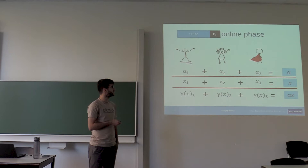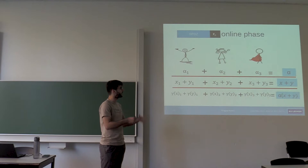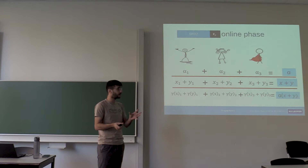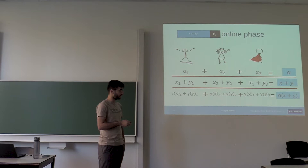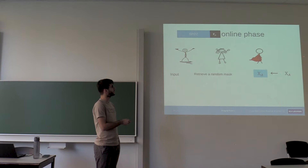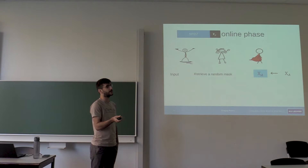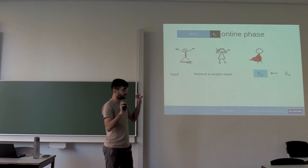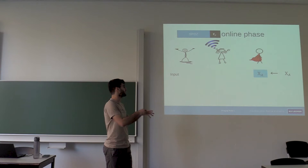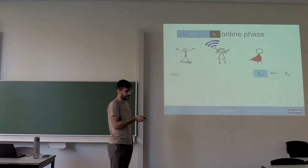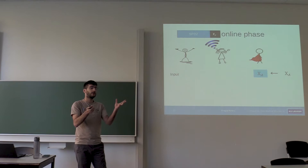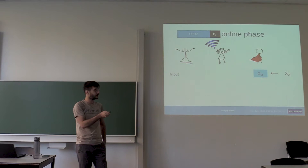How do we add? Every party just adds locally. If we have a share of Y and a share of X, we can add locally, obtaining a sharing of X plus Y, and the same goes for the authentication. To provide inputs: if Alice has an input and wants to secret share it, she retrieves a random pre-processed mask, masks her input with that mask, broadcasts the masked value, and now every party can adjust their share. So providing inputs means retrieving a random pre-processed mask, opening the masked input, and adjusting shares to get a secret sharing of Alice's input.